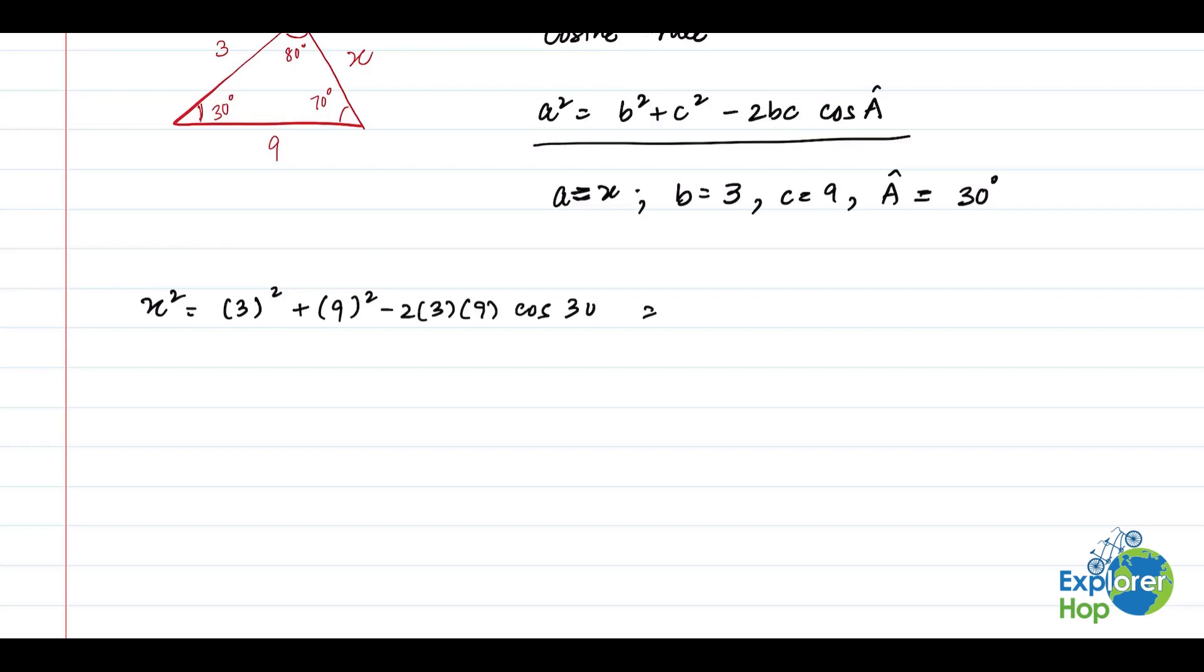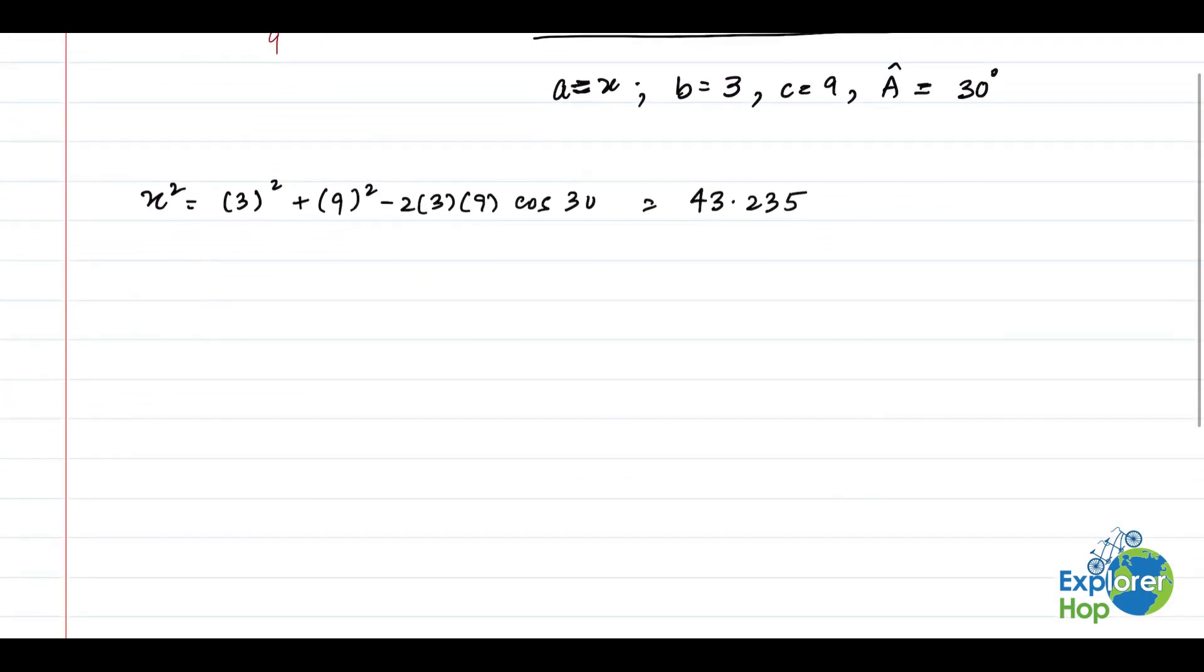And if you put everything in the calculator correctly, you will get 43.235. Notice that this is the value of x squared. This is not x. We are supposed to find x. So what we'll do is we'll take the square root on both sides. So we will get x to be equal to square root of 43.235, which in using a calculator is 6.58.